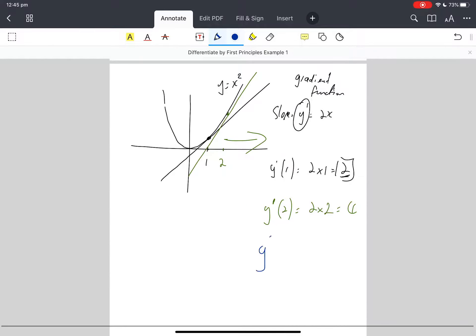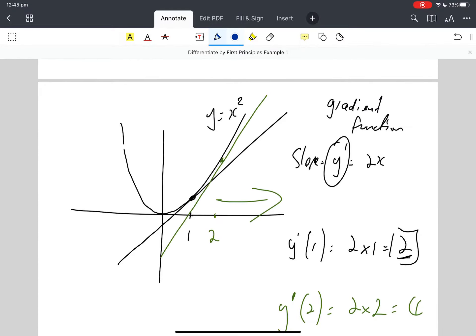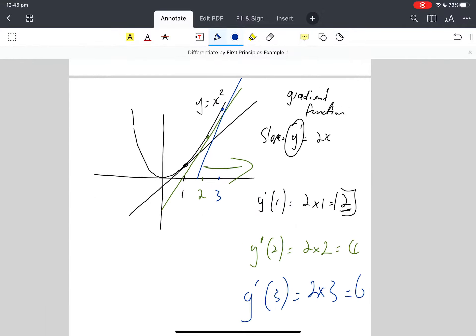So the slope where x equals 3 is 2 times 3, because I'm setting that x. This is my gradient function. I'm setting x equal to 3. 2 times 3 is 6. The slope where x equals 3, where x equals 3, the slope is even steeper. Are we happy with that? Oh my gosh, that makes sense.